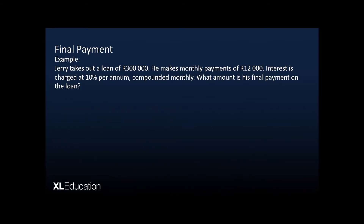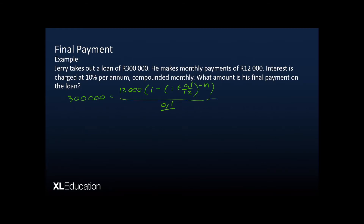First we must solve for the total number of payments using the present value formula. We have 300,000 rand equal to the present value with payments of 12,000 rand, an interest rate of 0.1 compounded monthly, and n unknown. After some algebra, we get 19 over 24 equals 1 plus 0.1 over 12 to the power of negative n. At this point, we need to use a logarithm to solve for n.